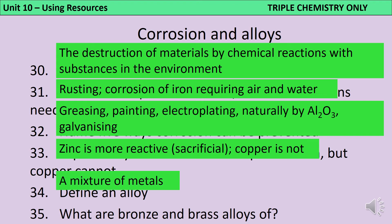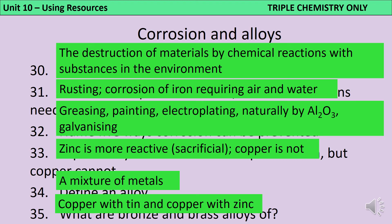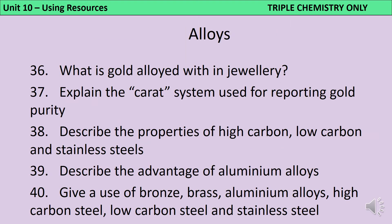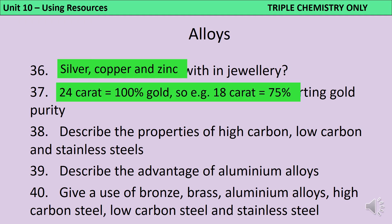An alloy is a mixture of metals, or a mixture of a metal with another substance like carbon. Bronze and brass are both alloys of copper: bronze is copper alloyed with tin, and brass is copper mixed with zinc. When gold is made into jewellery, it's often alloyed with silver, copper and zinc to make it harder. The carat system describes how pure the gold is — 24 carat is 100% pure gold. An 18 carat ring means 18 is 75% of 24, so 75% of that metal is pure gold and the other 25% is other metals like silver, copper or zinc added to make it harder.